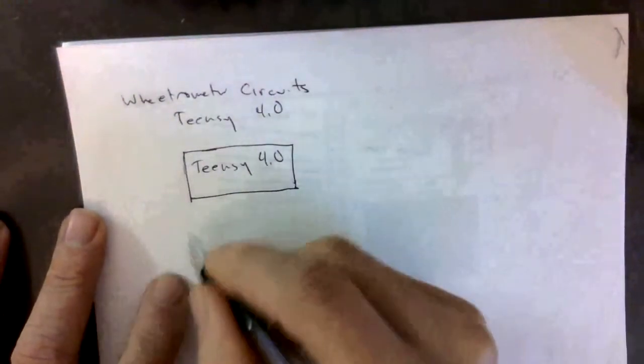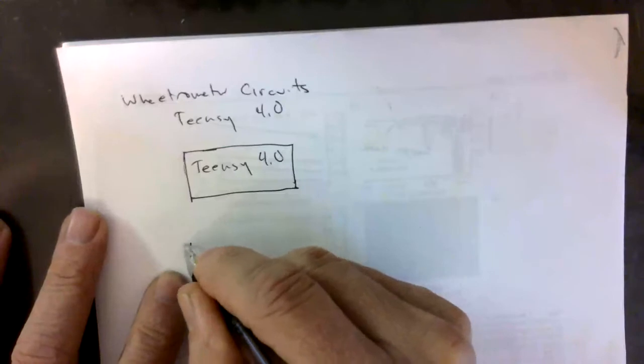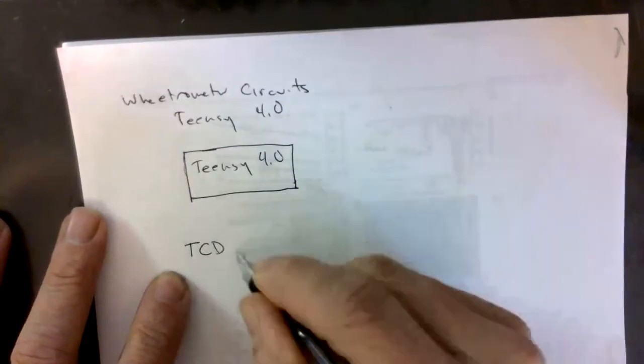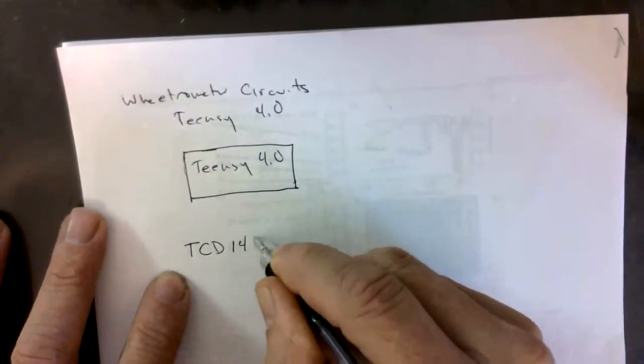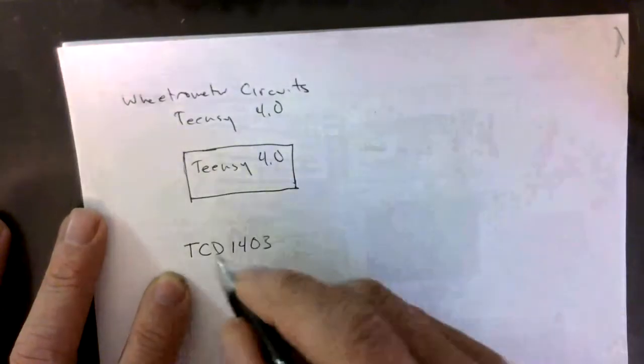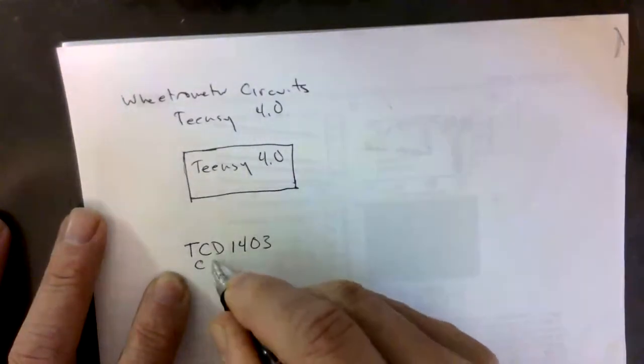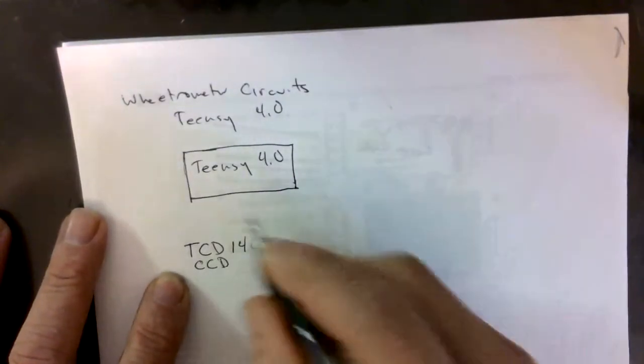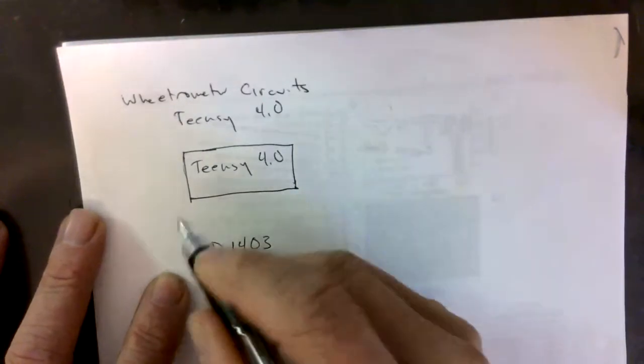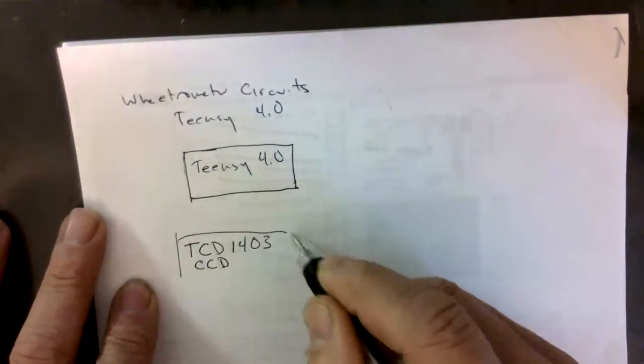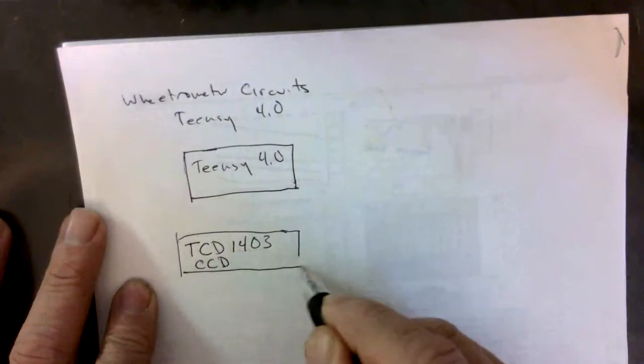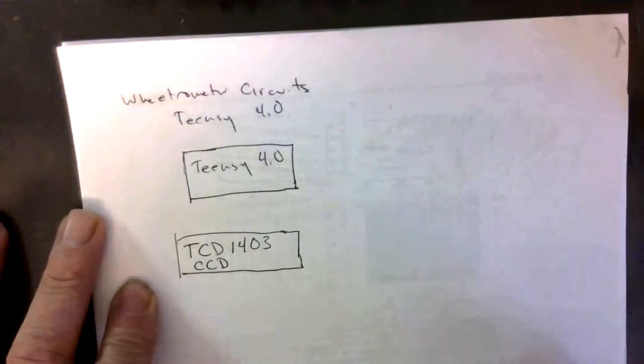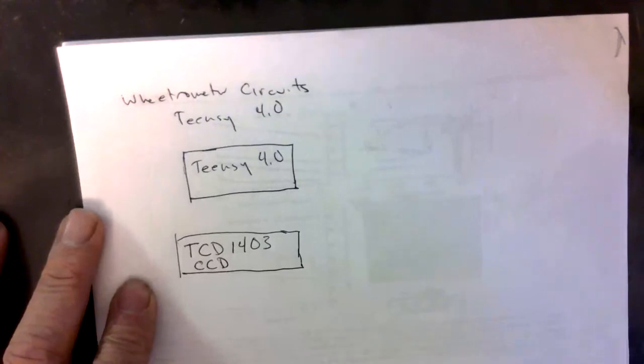We also have a TCD 1403, which is the charge circuit device, charge capture device. This is our detector that picks up the light intensity.